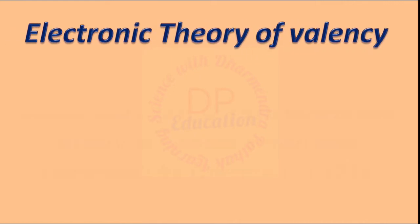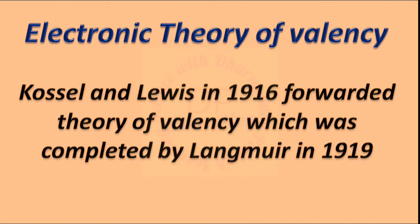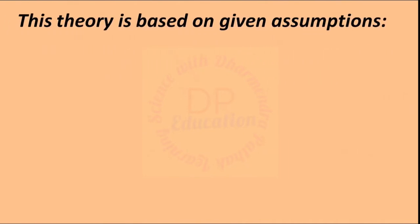The Electronic Theory of Valence was forwarded by Kossel and Lewis in 1916, and was completed by Langmuir in 1919. This theory is based on certain assumptions.